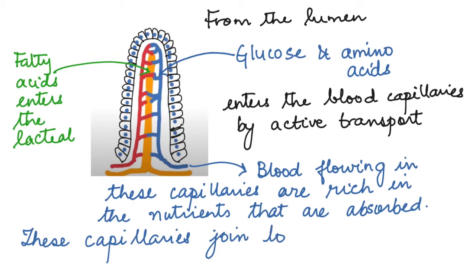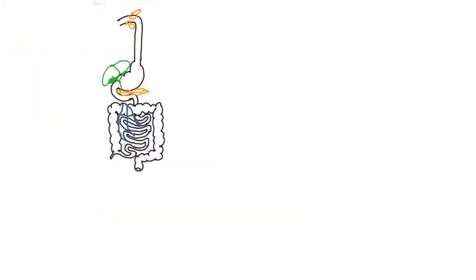These capillaries join together and form the hepatic portal vein. The hepatic portal vein is a blood vessel that is formed by capillaries arising from the small intestine and the stomach, and then it enters into the liver.